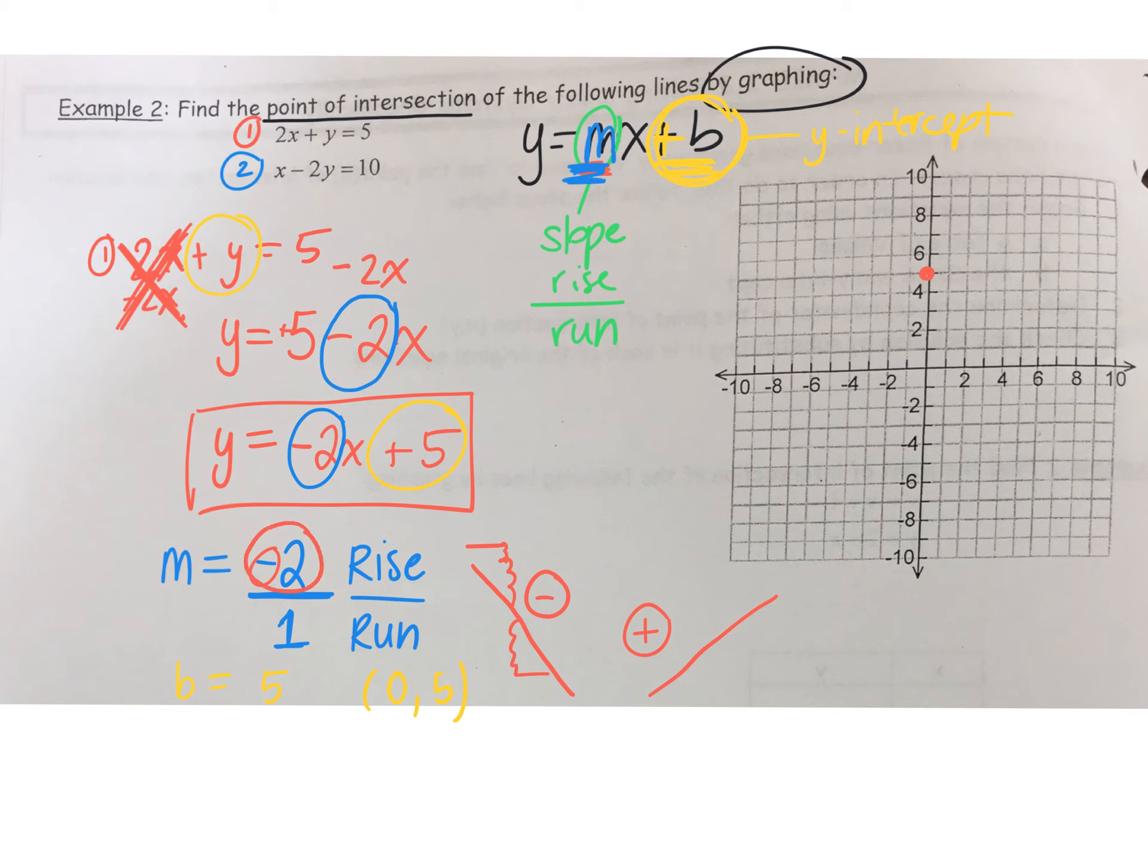We're going to rise by negative 2. So I can go down by 2. Negative 2. If I go down by 2, then I have to go left or right by 1. Right. There's the next point. Rise is 2. Run is 1. 2 over 1.